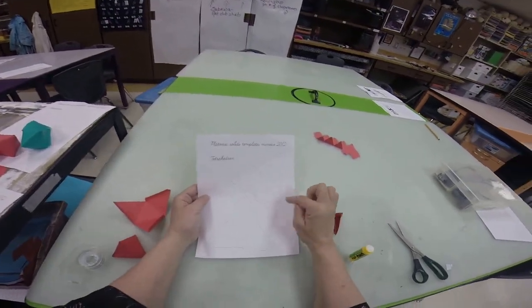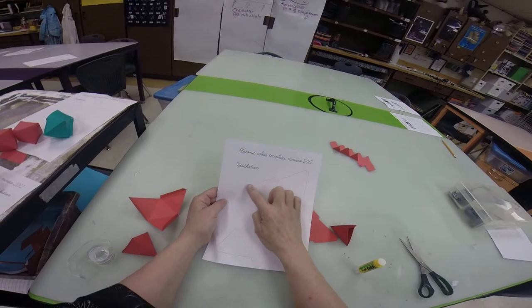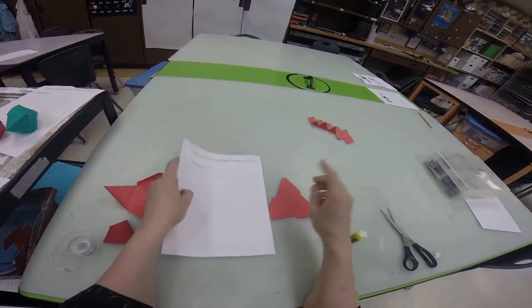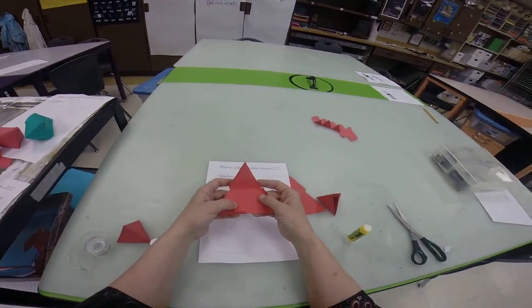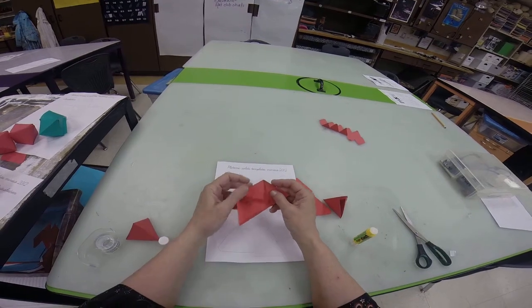Okay, tetrahedron. Again, you're just going to cut around the outside edge. There are two to a page. You're going to crease it really well, and this is the easiest one.